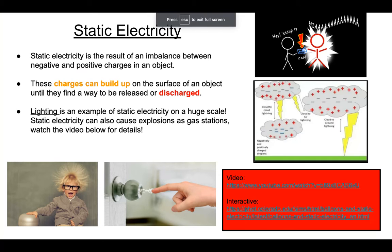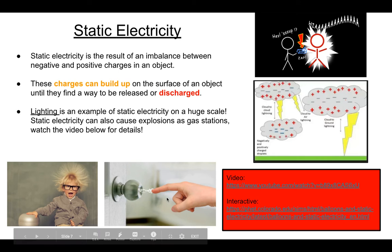Okay, so when you look at the next slide, then we start talking about static electricity. So you've definitely encountered static electricity whether or not you realized it was electricity. So static electricity is the result of an imbalance between negative and positive charges in an object. These charges can build up on the surface of an object until they find a way to be released or discharged. So if you've ever walked across a carpet and then touched a metal object or another person, that zap that you felt, that was static electricity. And it was literally just a really large number of electrons jumping from one thing to another.